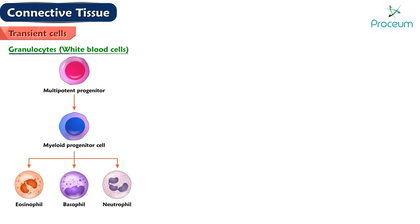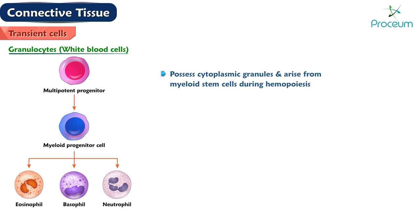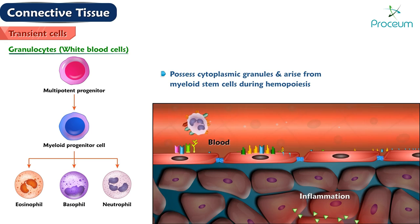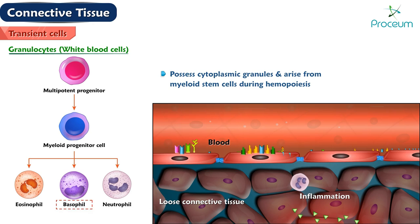Granulocytes are white blood cells that possess cytoplasmic granules and arise from myeloid stem cells during hemopoiesis. At sites of inflammation, they leave the bloodstream and enter the loose connective tissue. These cells include neutrophils, basophils, and eosinophils.